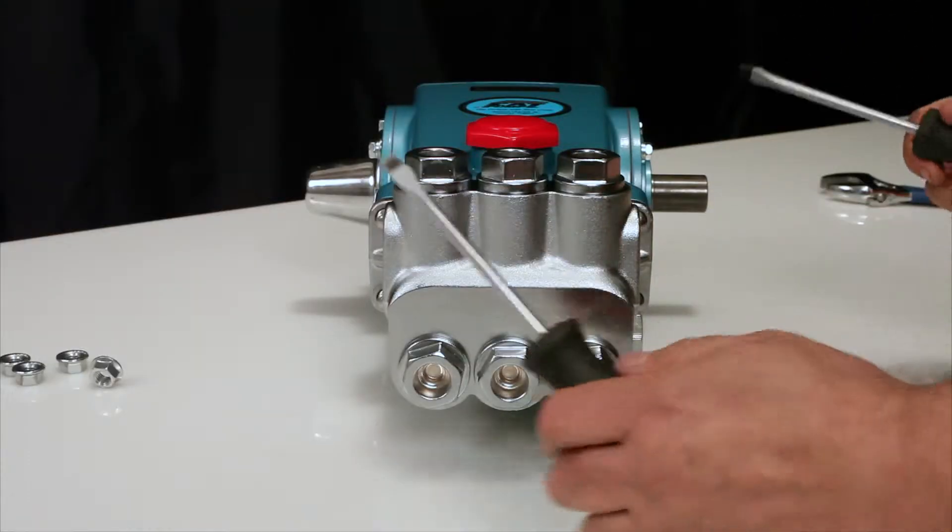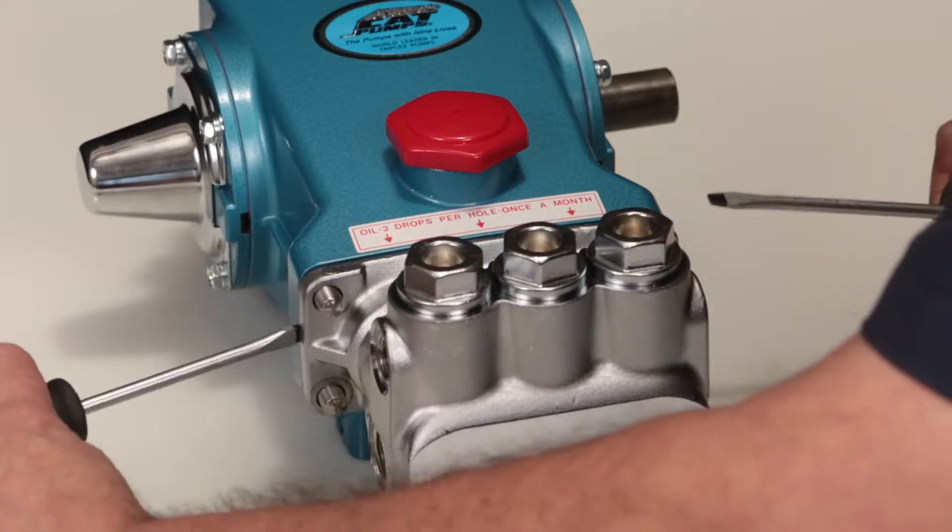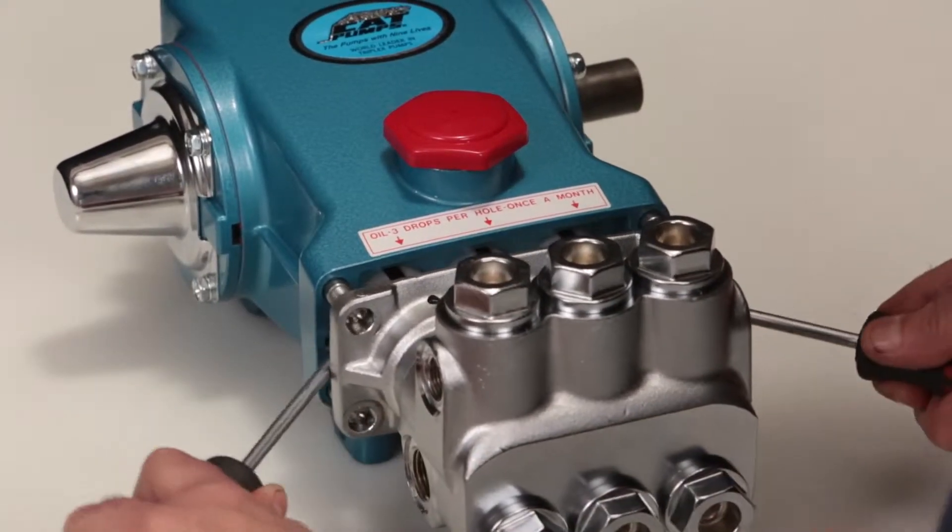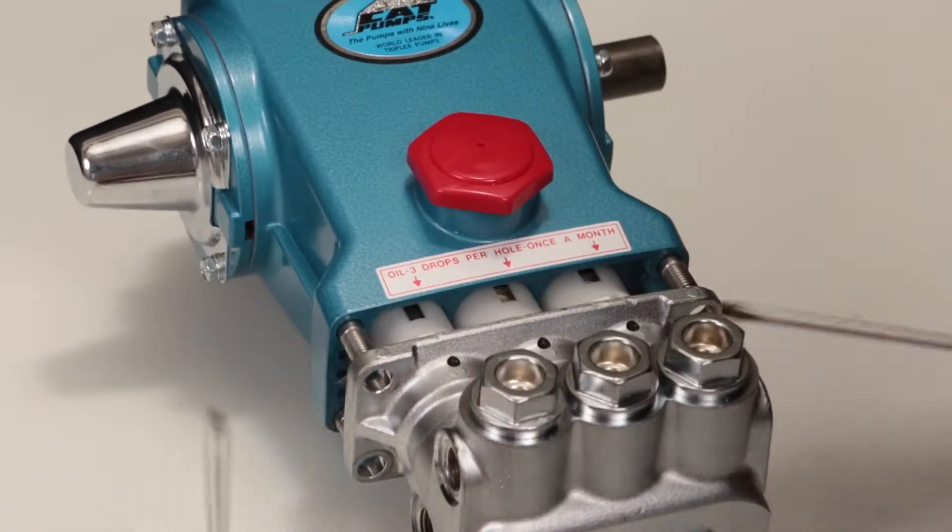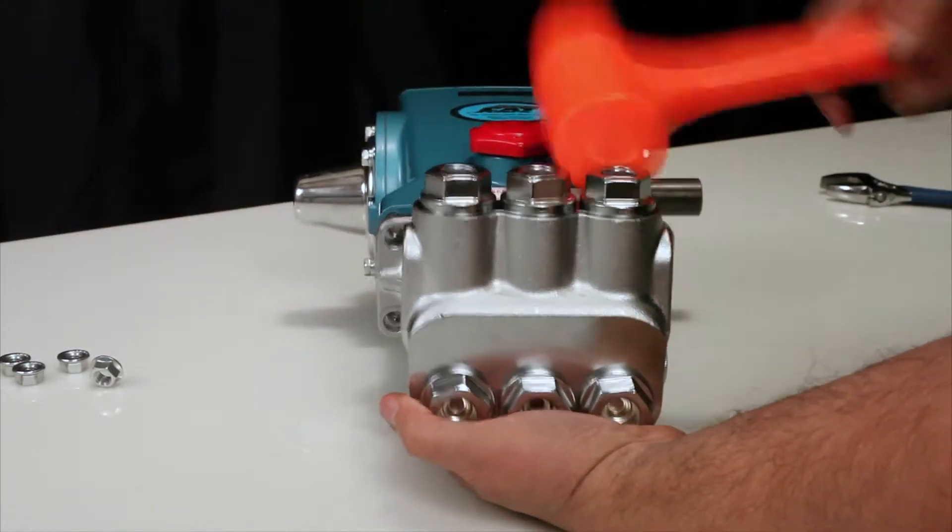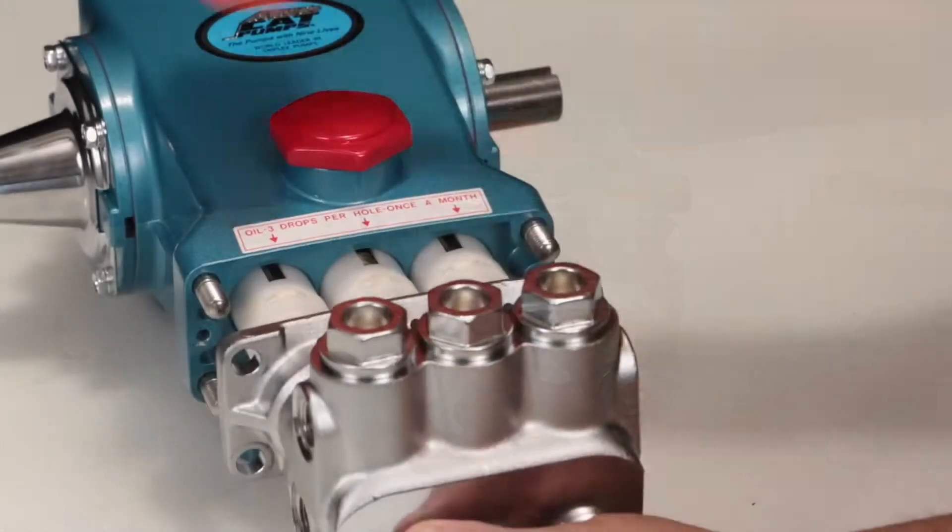Once separation has been made, use two flat tipped screwdrivers to pry the manifold away from the crankcase. While supporting the weight of the manifold, use a rubber hammer to completely remove the manifold from the crankcase.